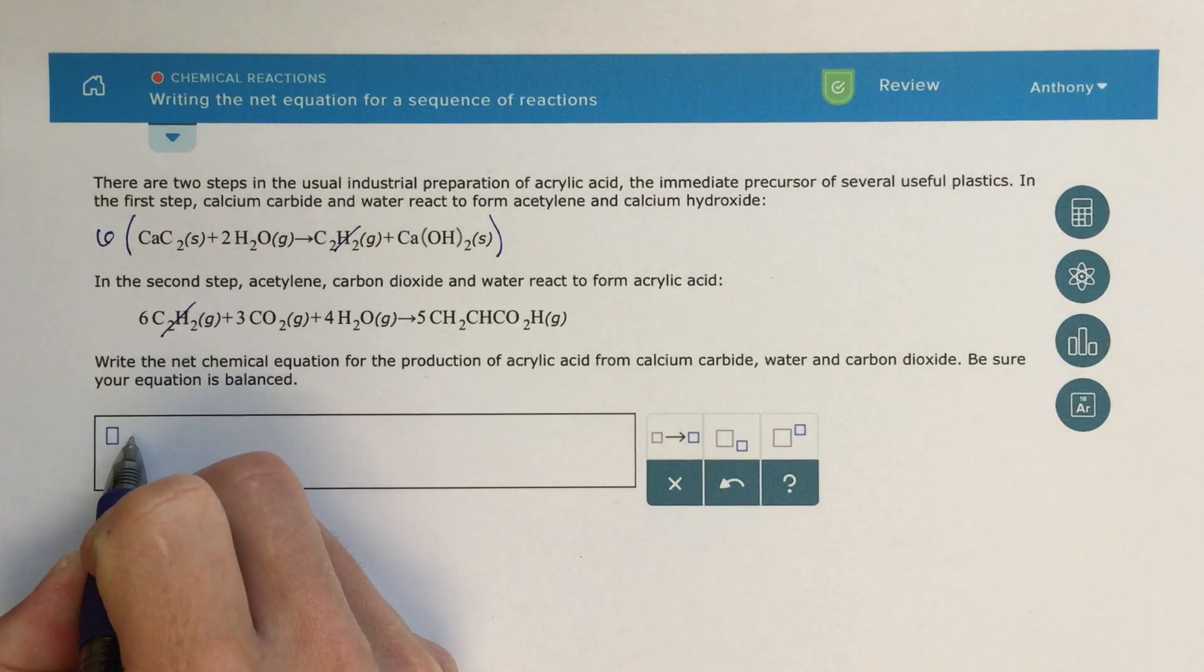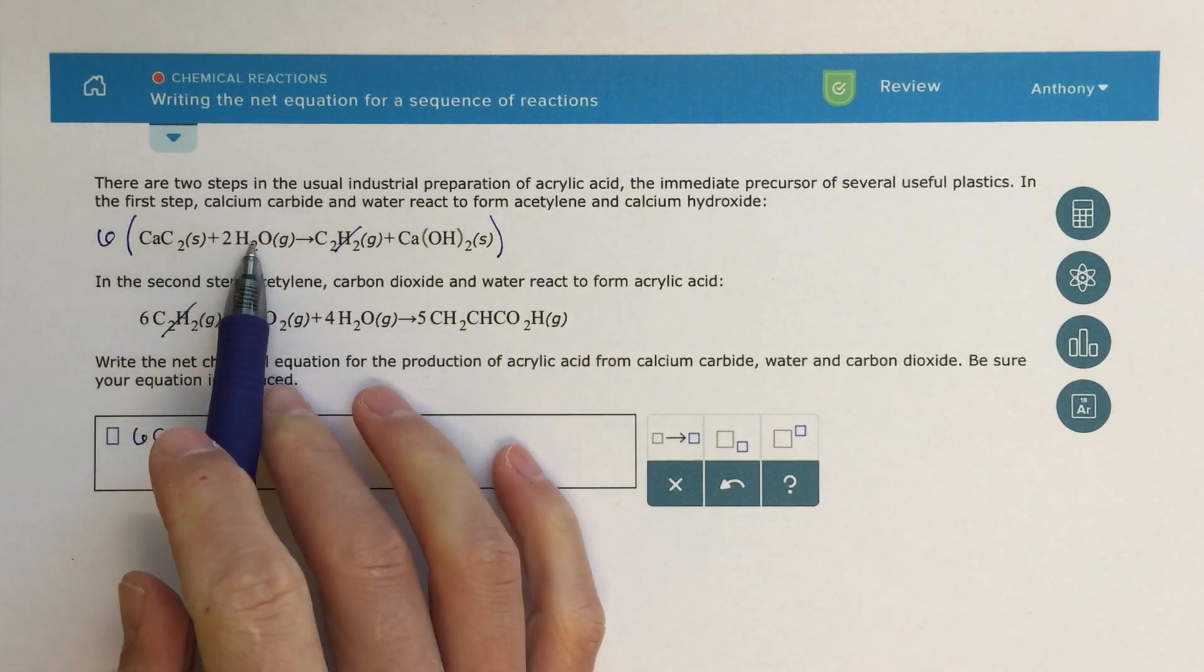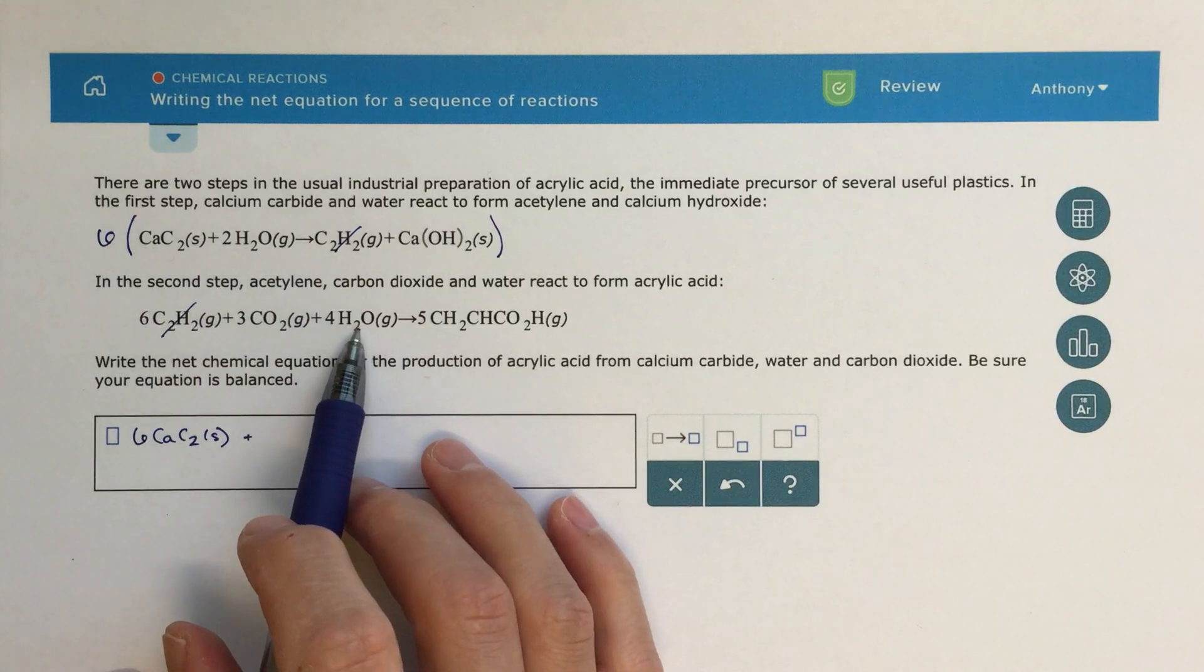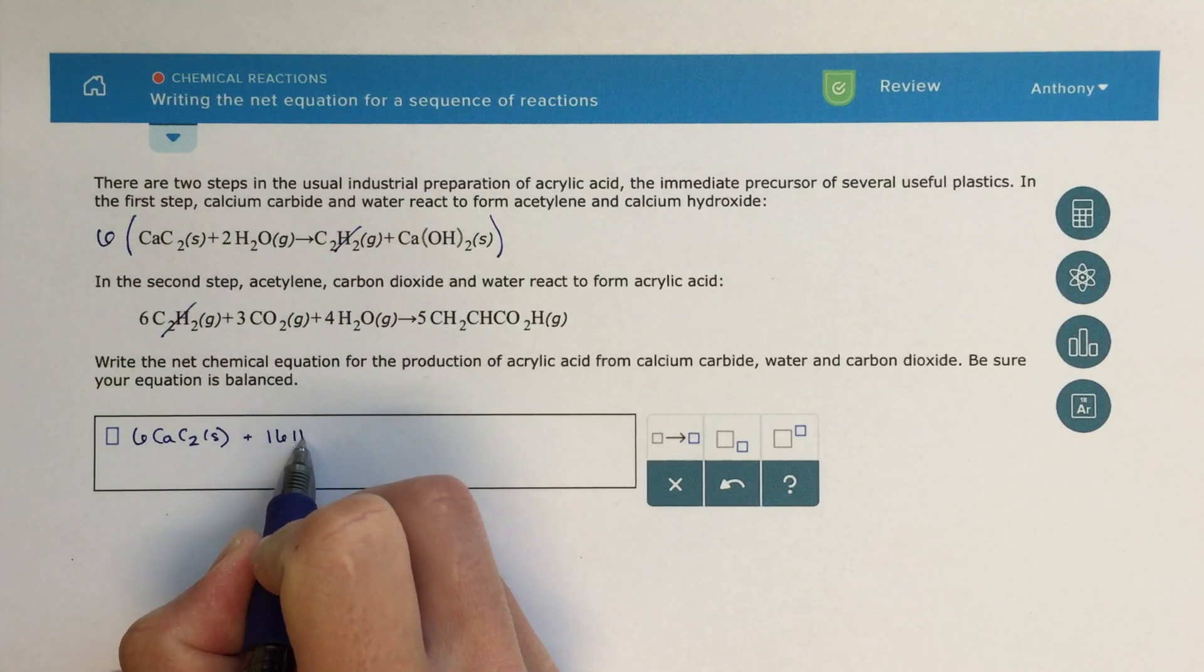So the way that I would write this out, it's six CaC2 solid. So now I've got 12 water molecules here, but I've also got four from the second reaction. So I'm going to add all those together, and I'm going to get 16 water molecules.